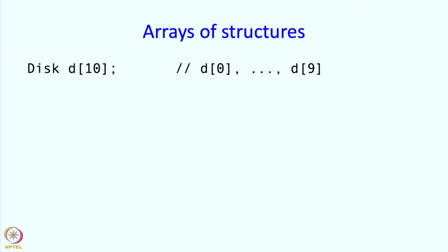Next, I can have arrays of structures if I wish. For example, I can write disk d[10] and this just defines variables d[0] through d[9] each of which is a disk. Similarly, I can have a variable lib, lib may be short for library which is an array of 100 books. This defines variables lib[0] through lib[99] each of which is a structure of type book.